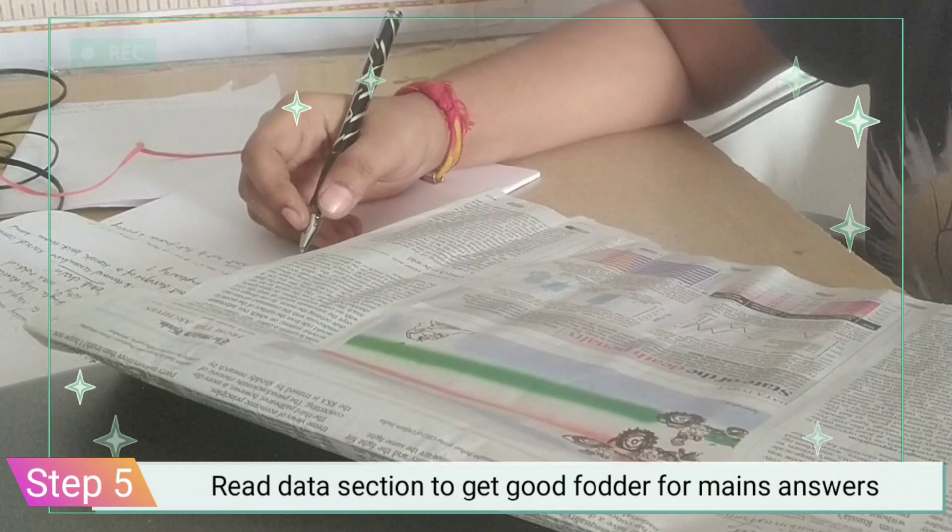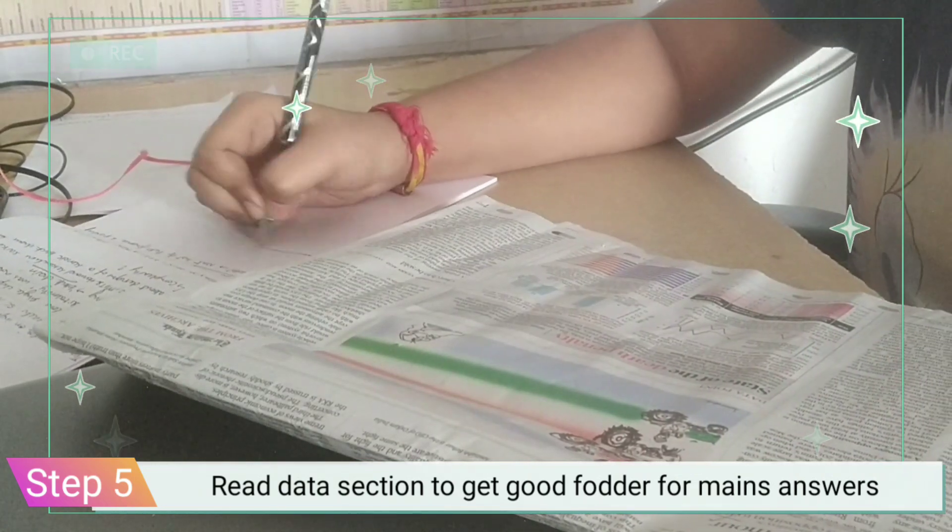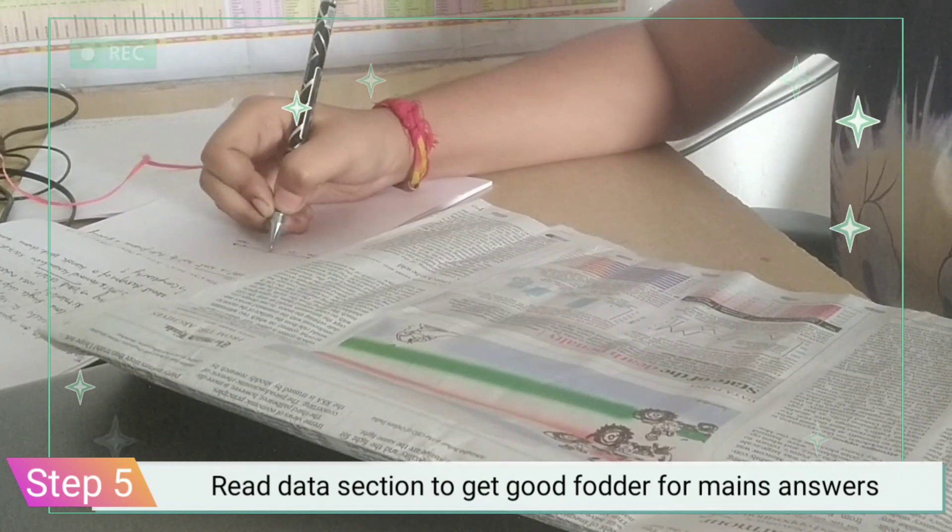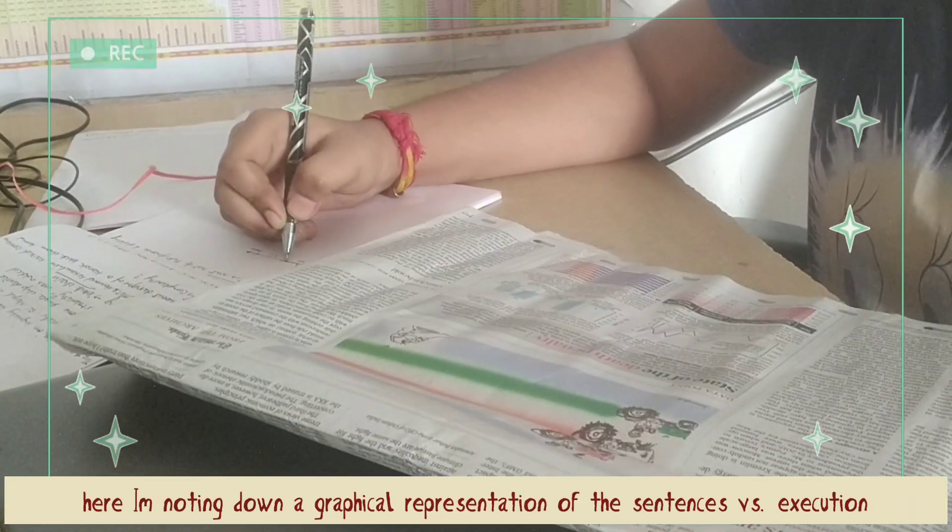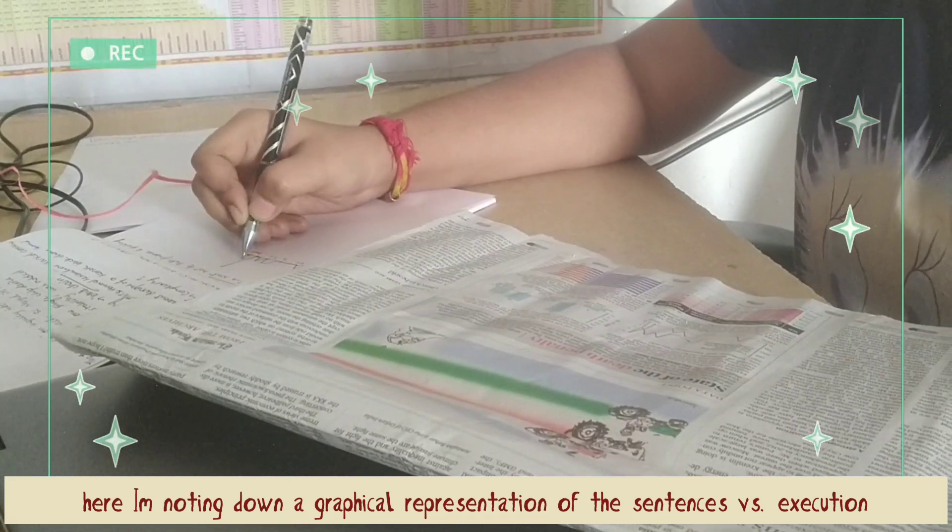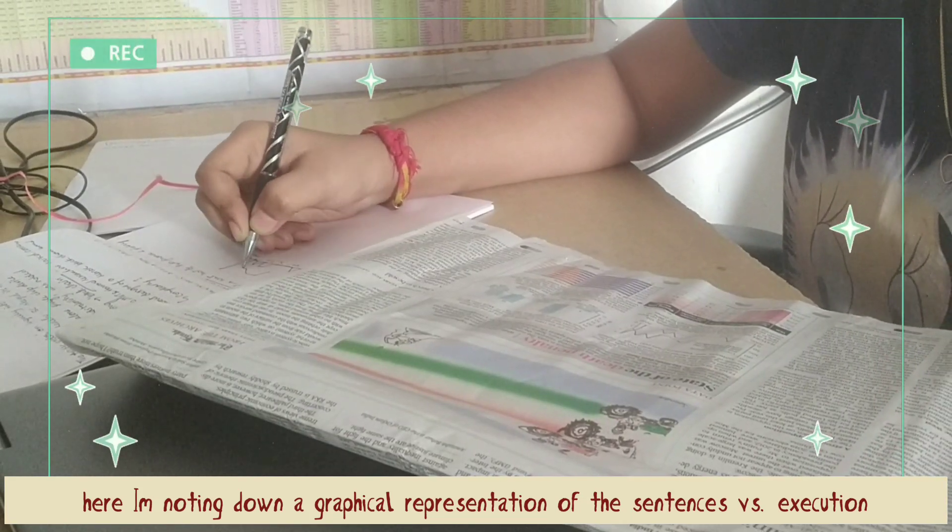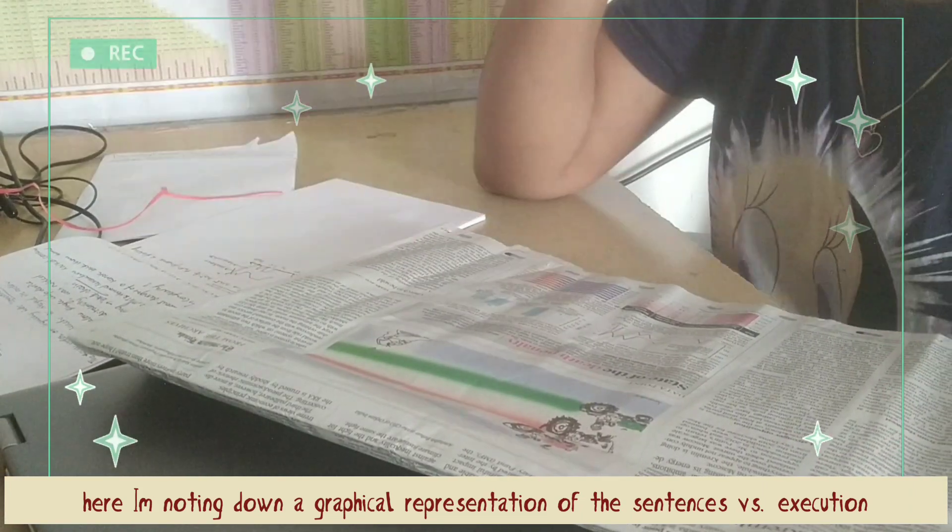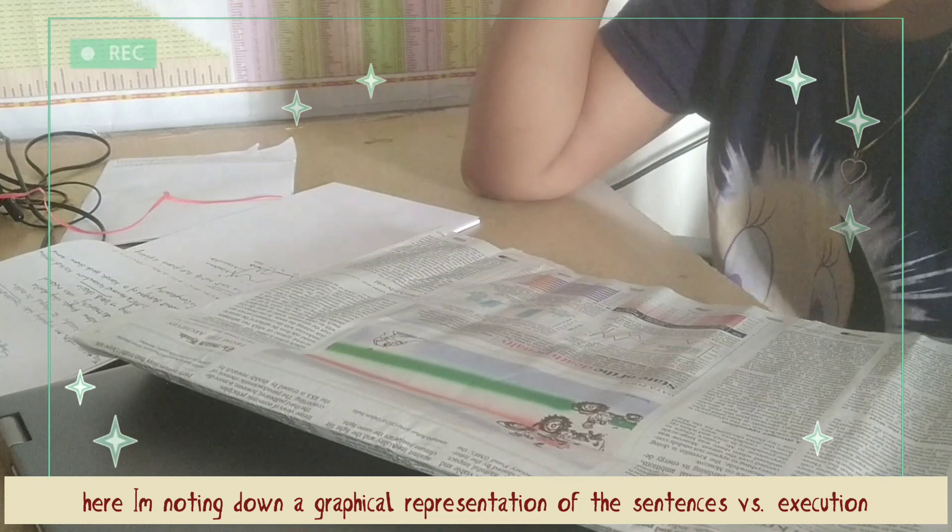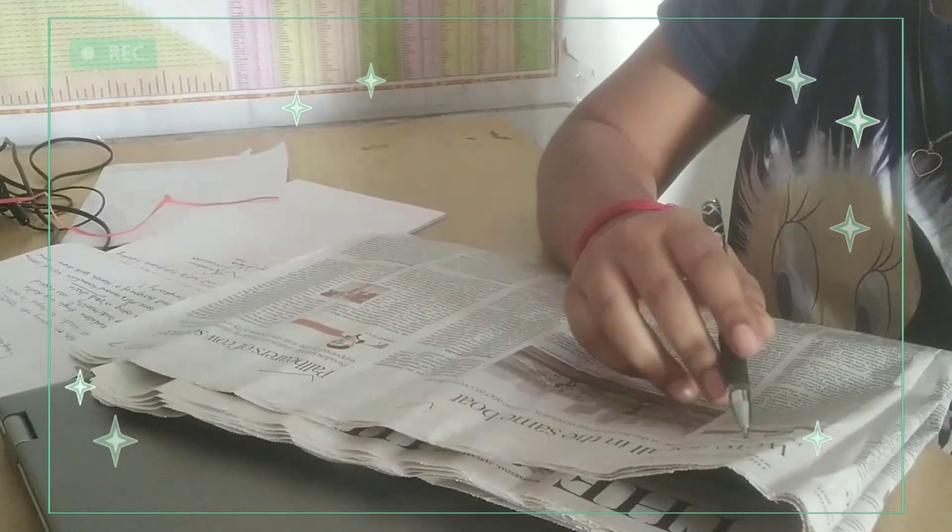So next is the data section. Sometimes there is good fodder for mains answers in data section. Here you can see in this particular video I was drawing a graph which was talking about the number of sentences that the judiciary has pronounced and the execution. So there was a relevance between both of them.